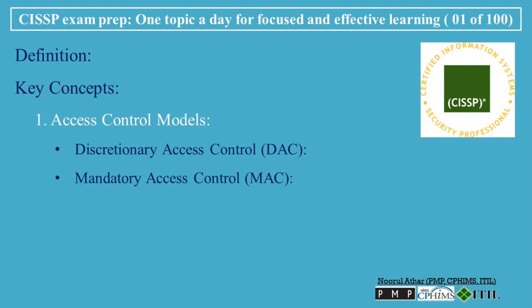Mandatory Access Control (MAC): access is determined by a central authority based on multiple levels of security. It's strict and often used in high-security environments like the military. Role-Based Access Control (RBAC): access is granted based on a user's role within an organization, simplifying management by assigning permissions based on roles rather than individuals.